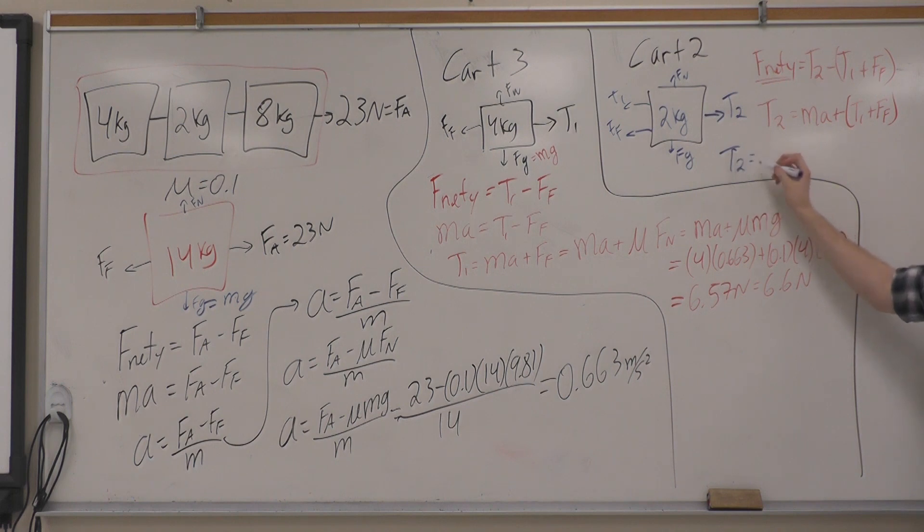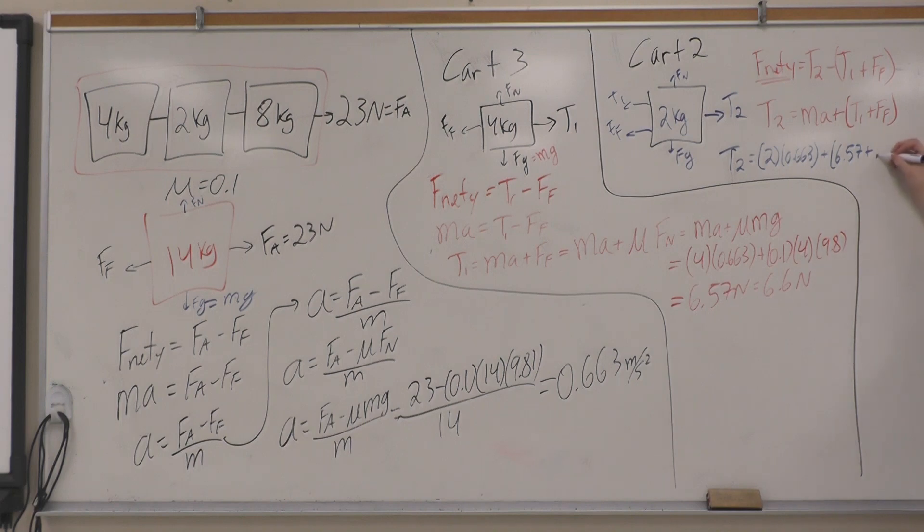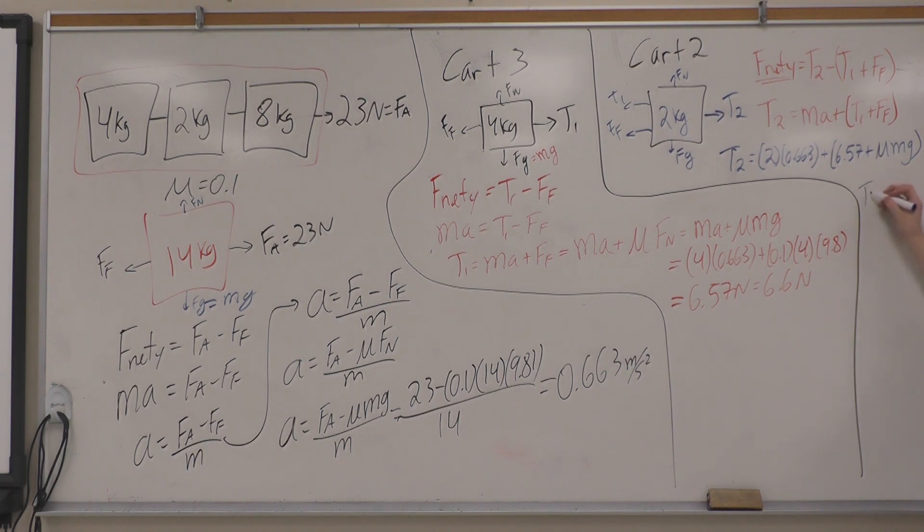We're now going to plug our variables in. Tension 2 is equal to the mass of 2 kg times the acceleration of the system of 0.663, plus tension 1 which we solved for to be 6.57, plus force of friction which we changed to mu M G. With this present, we can solve for tension 2. Tension 2 will equal 9.89 newtons, or tension 2 is 9.9 newtons.